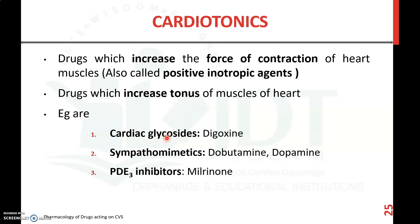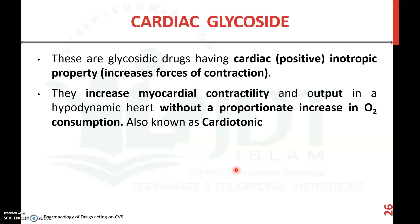Different examples of cardiotonics are cardiac glycosides like digoxin, sympathomimetic agents acting on adrenergic receptors, especially the beta-1 receptor, such as dobutamine and dopamine, and PDE3 inhibitors like milrinone. Here we will discuss in detail about cardiac glycosides.